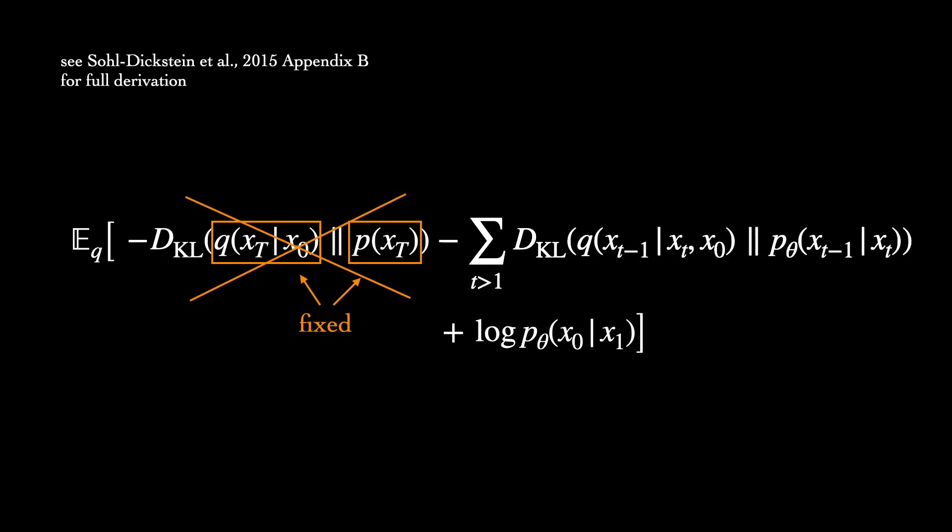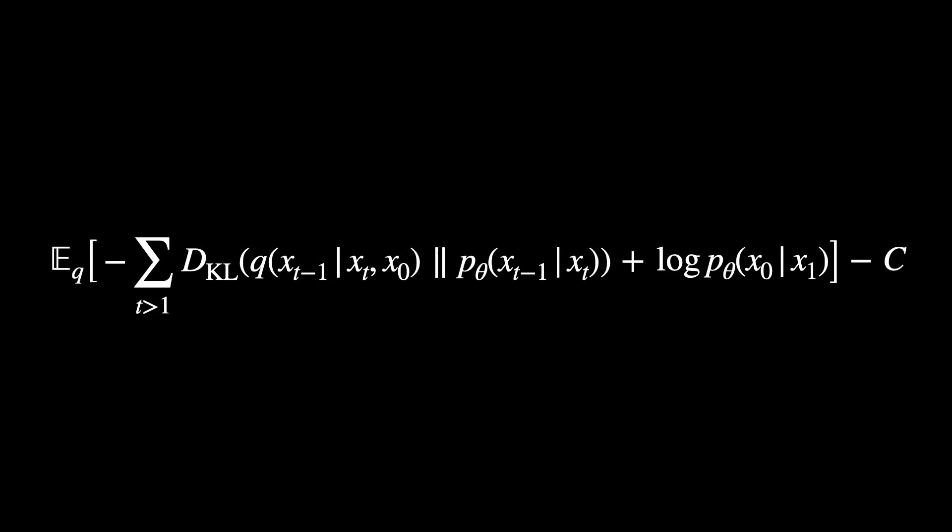Here we have a sum of KL divergences, each between a reverse step and a forward process posterior conditioned on.